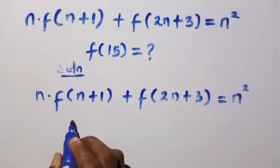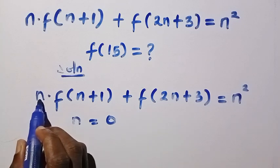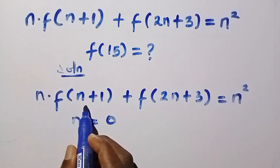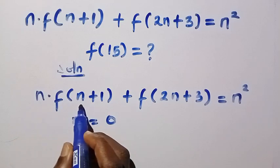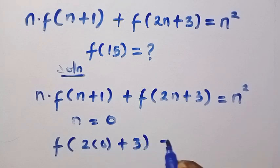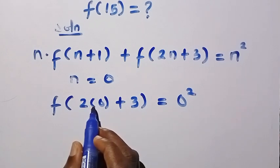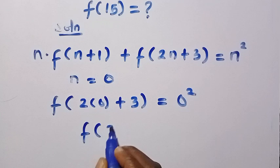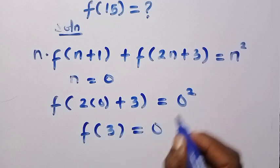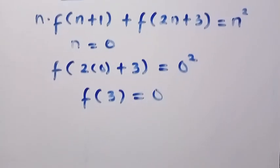Suppose we let n equal 0. Anywhere we see n, we change it to 0. Applying n equals 0 here, the first term becomes 0 times f of 1, which is 0. For the second term we have f of 2 times 0 plus 3 equals 0 squared. That gives us f of 3 equals 0. So we have gotten f of 3 equals 0.